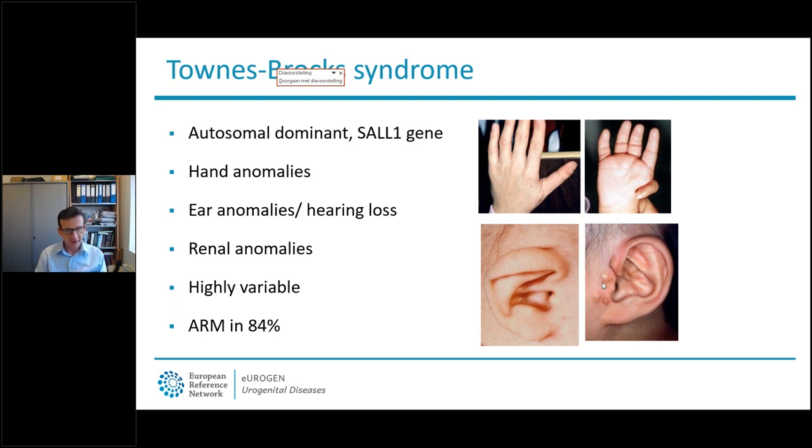Looking at families with this syndrome, we see it can be highly variable, and some family members may only have hand or ear abnormalities without a recognized anorectal malformation. So if you see this in a patient, it's also important to look at family members.